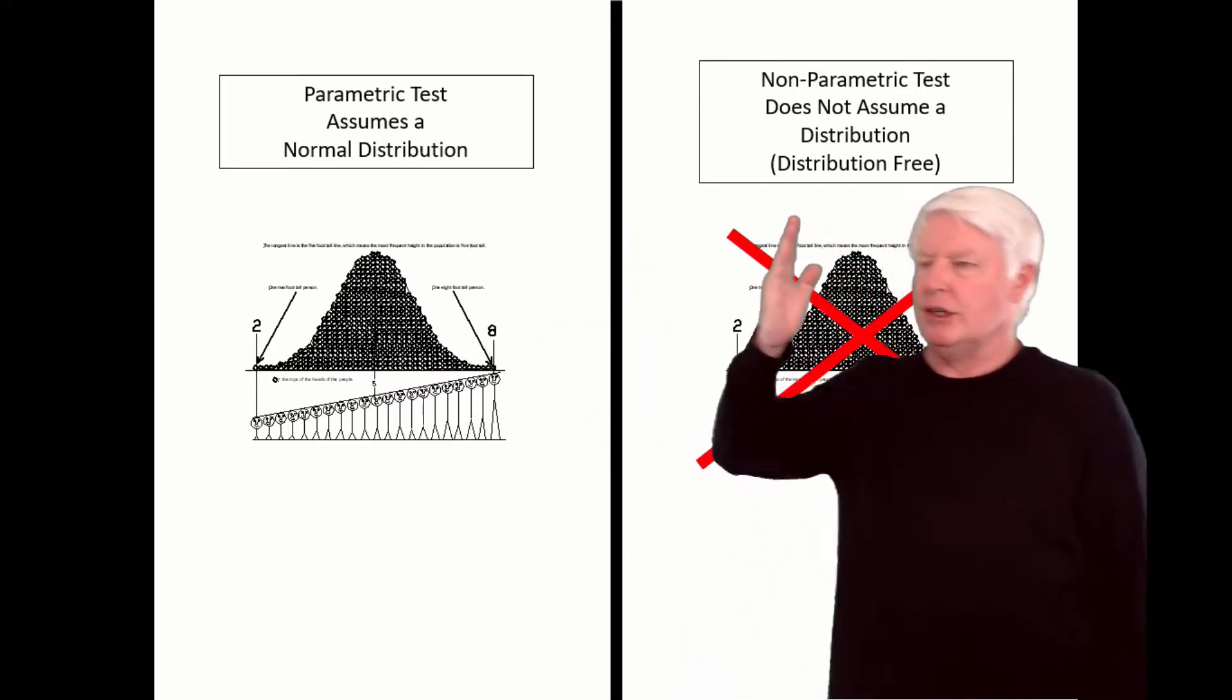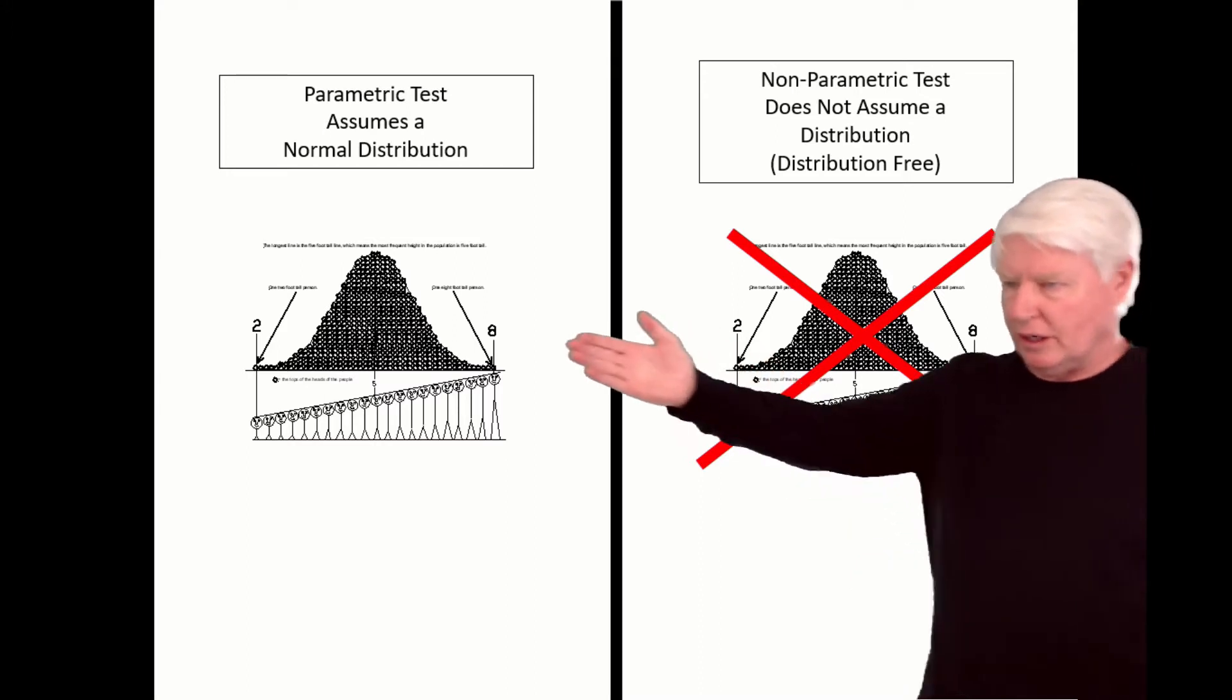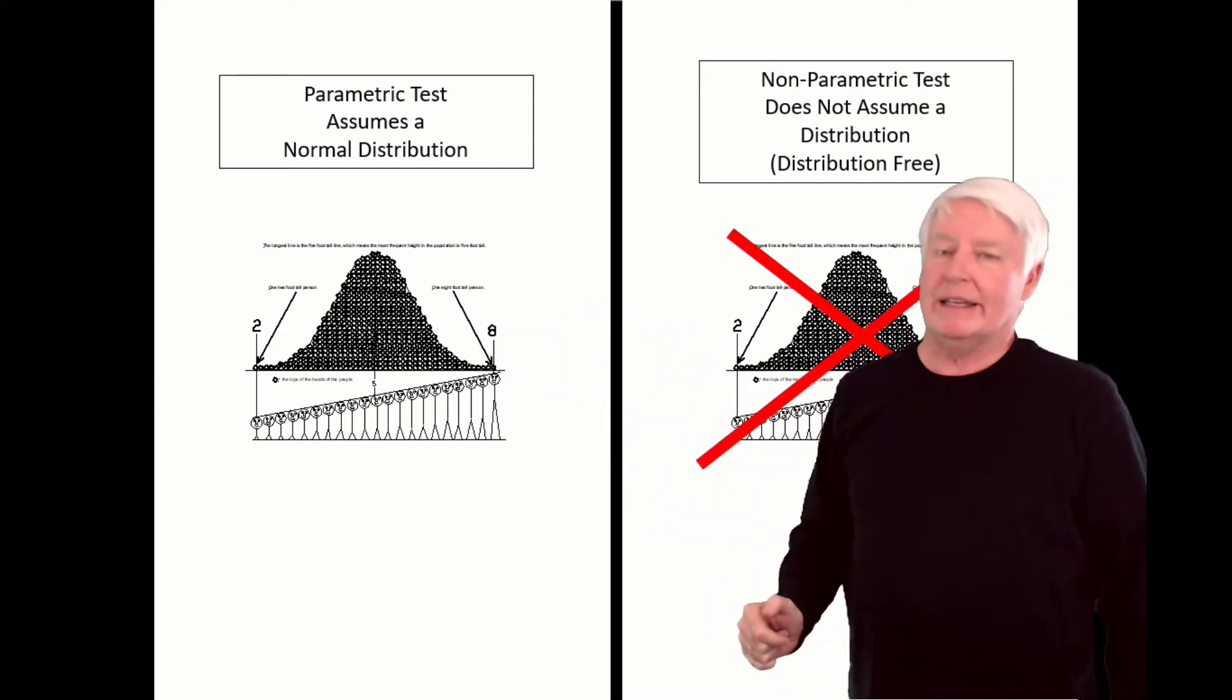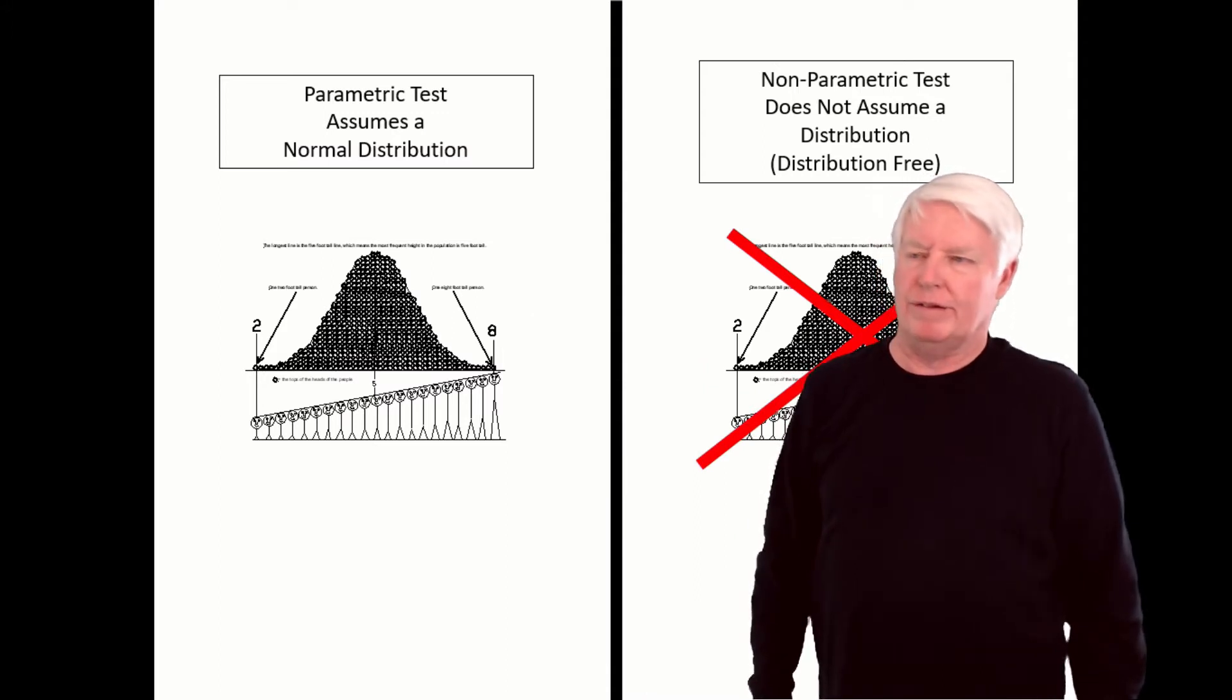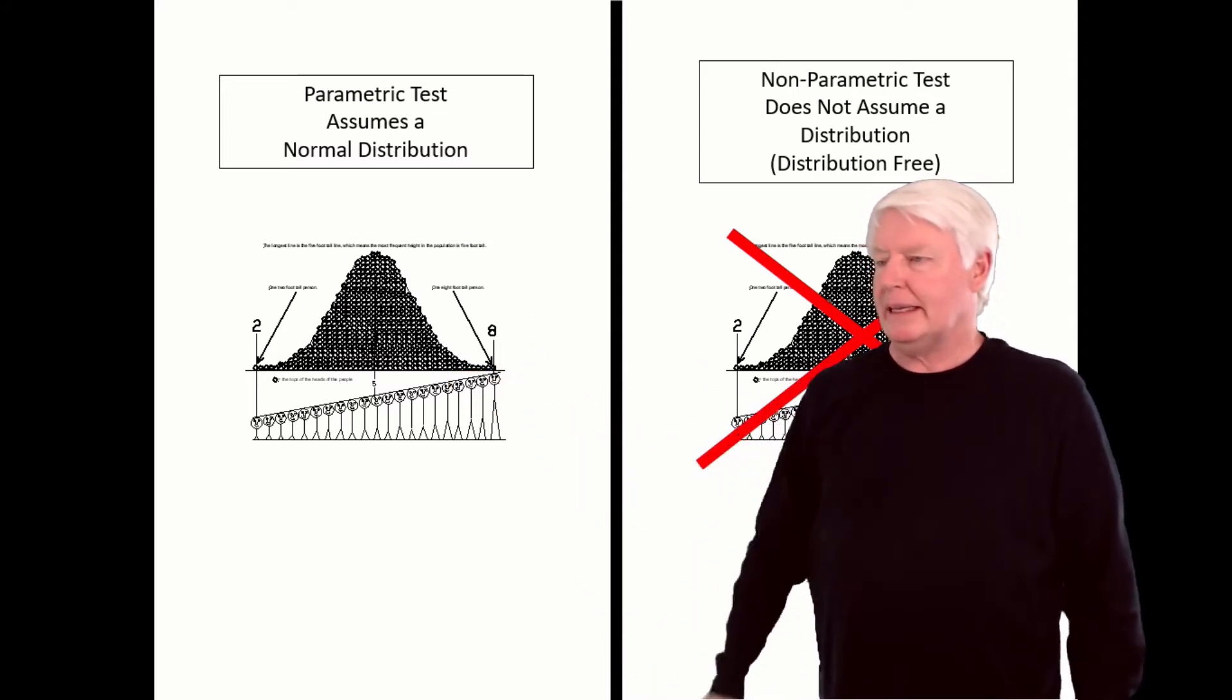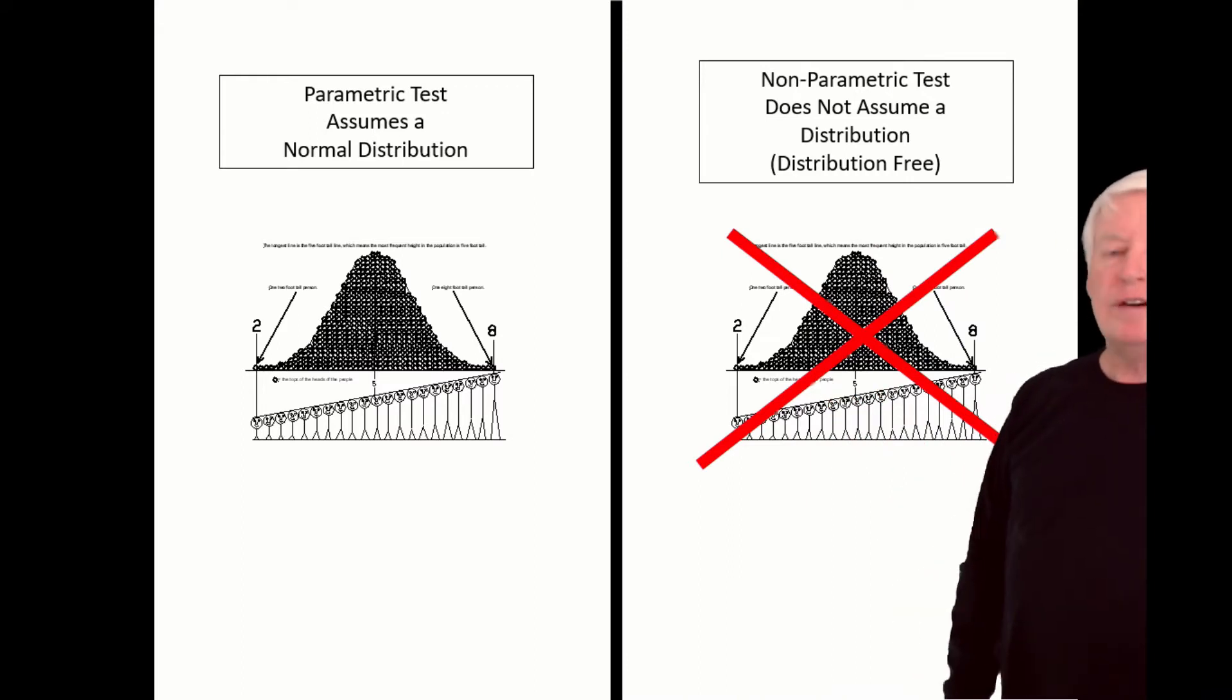So between these two, most would agree that if you can fulfill the assumption of a normal distribution, validate that, then the parametric test will be more powerful. But if you can't meet that assumption, then non-parametric tests are still very powerful.